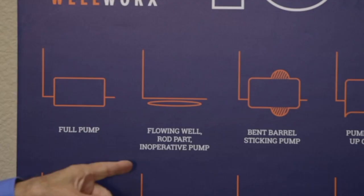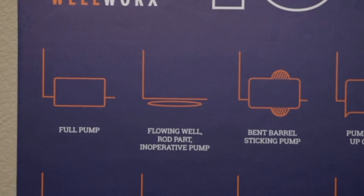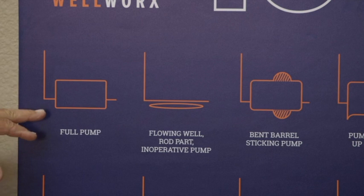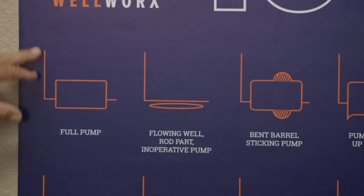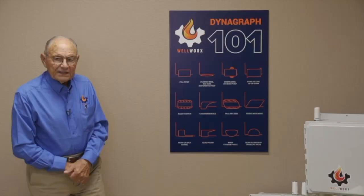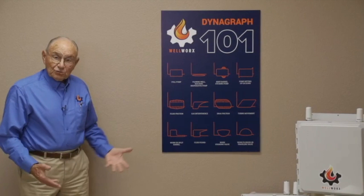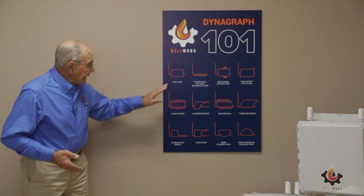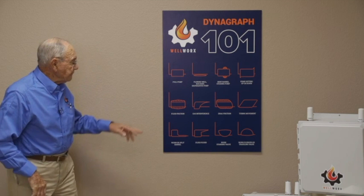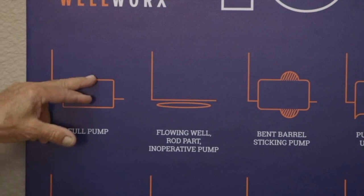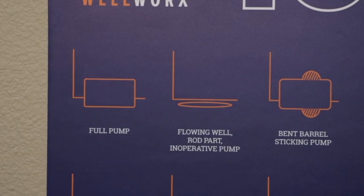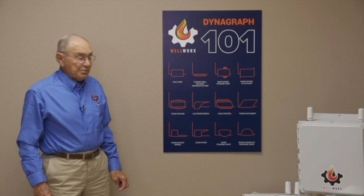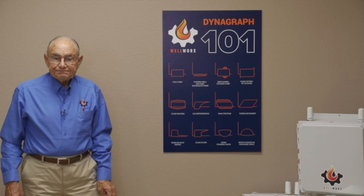This second picture shows a flowing well, a rod part, or an inoperative pump — they all look the same. One thing to point out is that the bottom of the card is always below the zero line. This load is below zero because of buoyancy on the rod string — that's why ships float. The rod string is buoyed up with what we refer to as a negative load, so the card is shifted a little bit below zero depending on the buoyancy. If you don't have anything going on — the fluid load disappears — it's a flowing well, a rod part, or an inoperative pump. You just have the rod string hanging there, and the card is below zero because you don't have a fluid load to get it above zero.